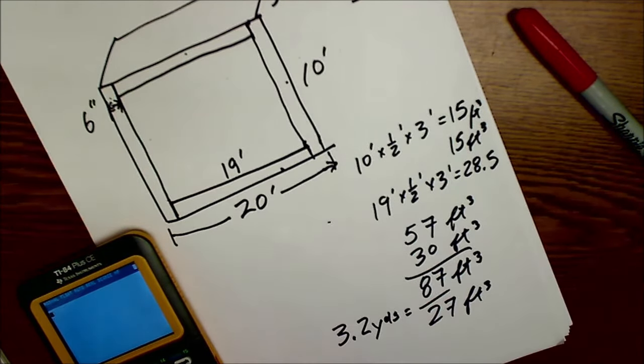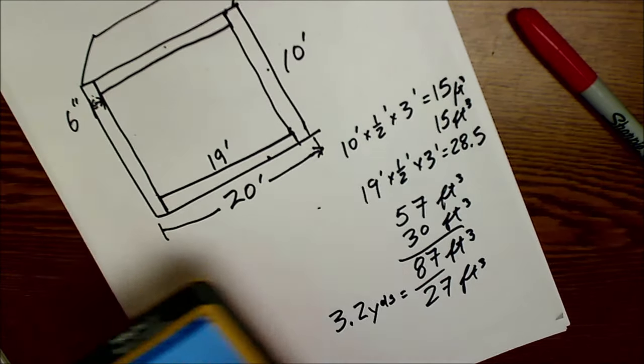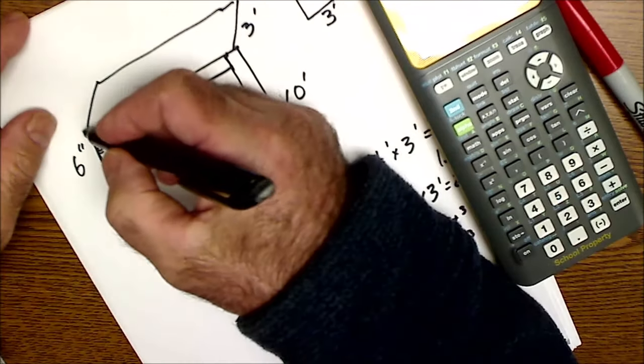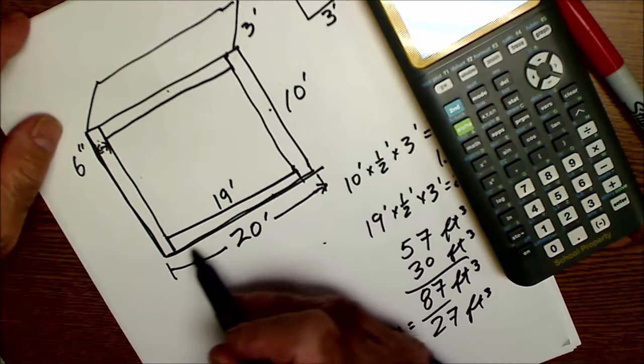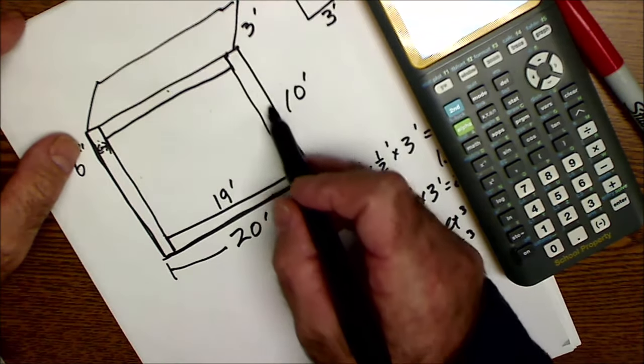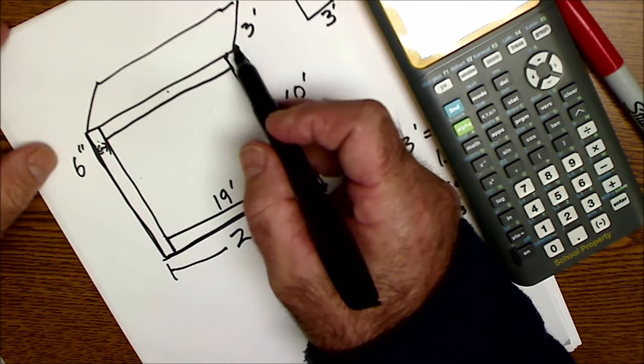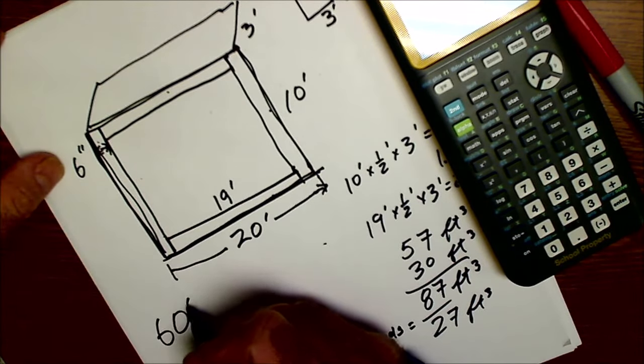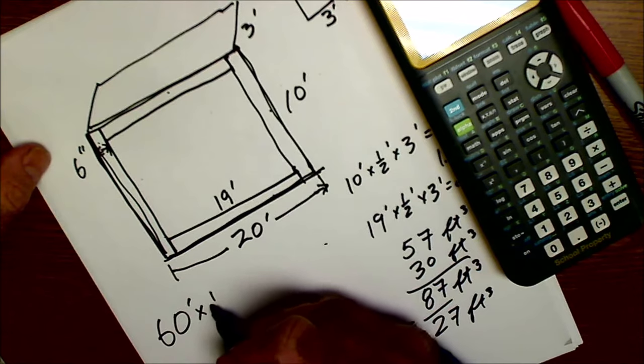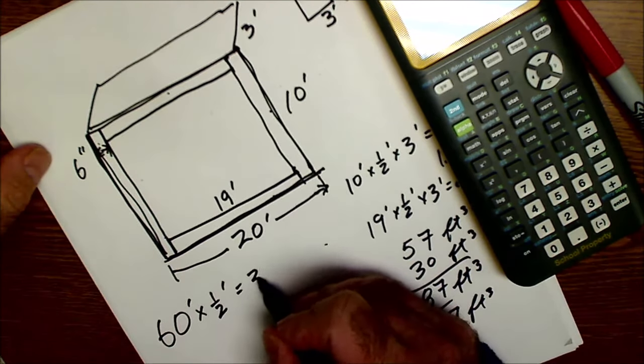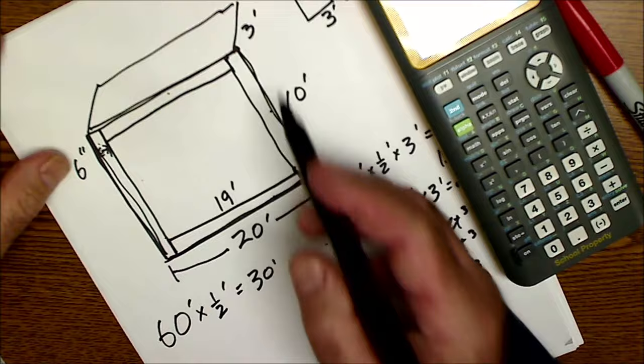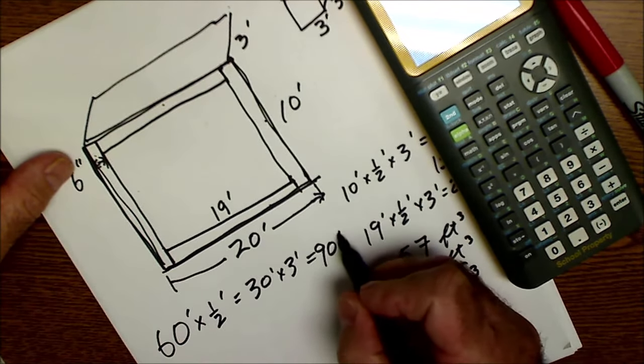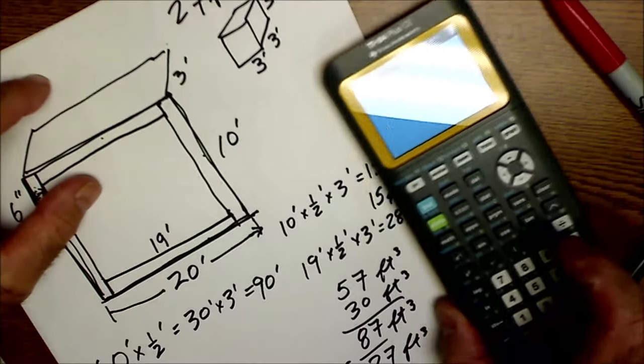Let me show you another way you could do this—it might be easier, it might not, I don't know. I could find the overall perimeter around the outside, so I'd have 20 plus 10, 30, plus 20, 50, plus 10, 60. So the perimeter on the outside is 60 times a half foot is 30 feet times 3 foot is 90 feet.